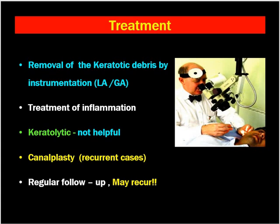Keratolytics may not be helpful and keratin debris may again accumulate because the underlying etiology is essentially faulty migration of the epithelium. In recurrent cases, canalplasty can be performed — the external canal is made larger or wider — so debris can be easily cleaned and there will be ventilation towards the bony external canal. The patient is to be asked for regular follow-up, as the condition is recurrent due to the faulty epithelial migration.